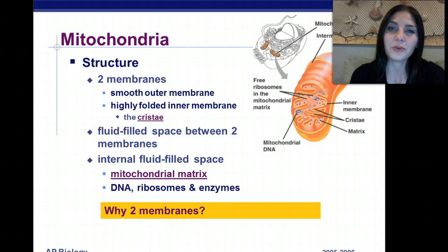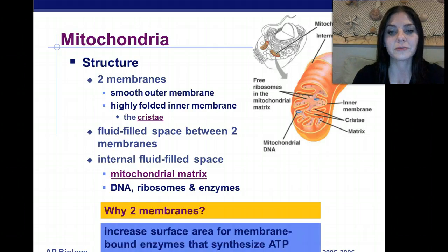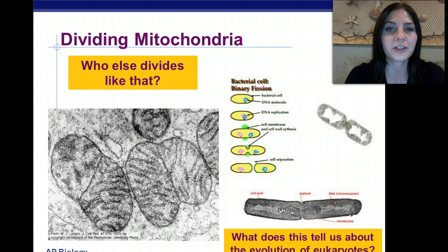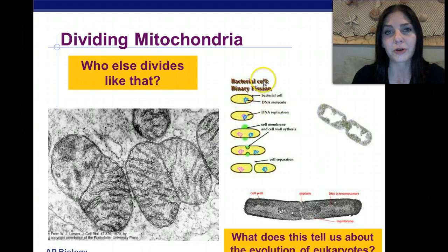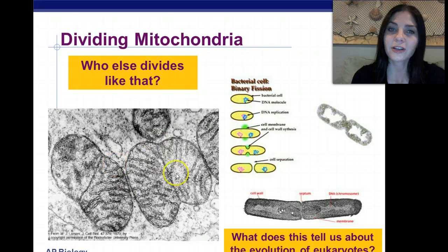Why does the mitochondria have two membranes? Think about why we need lots of curves and folds — we want to increase the surface area, which increases the amount of ATP that's going to be produced. Prokaryotic cells also divide similarly to mitochondria, through a process called binary fission. In binary fission, we start off with a prokaryotic cell with its DNA — remember they do not have a true nucleus — and eventually the cell splits into two, just like the mitochondria.